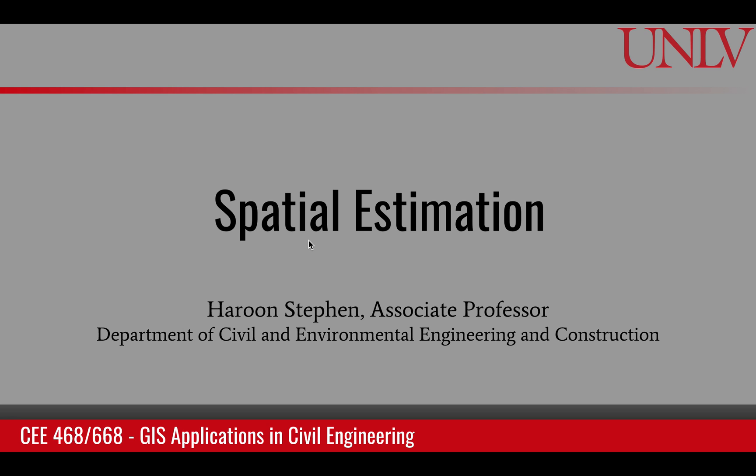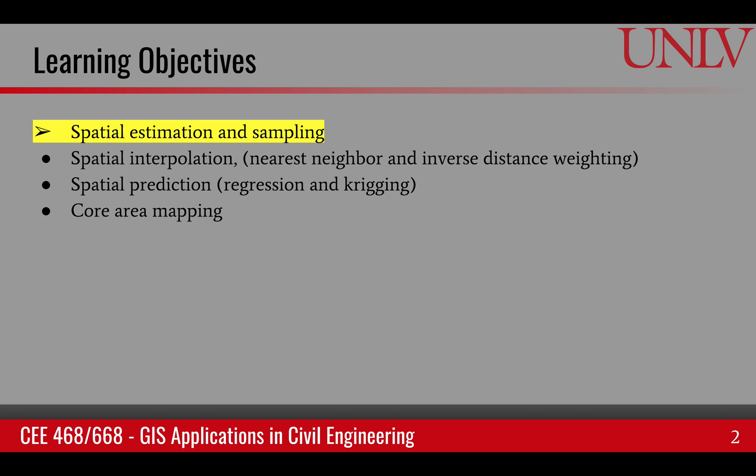This module is about spatial estimation in GIS. The learning objectives covered by this module include spatial estimation and sampling, and then three types of spatial estimation: namely spatial interpolation, spatial prediction, and core mapping.